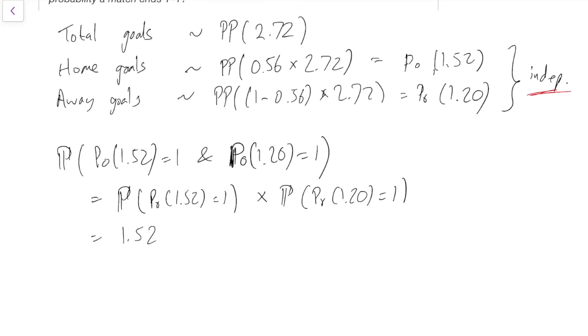So that's 1.52e to the minus 1.52. Similarly, this is 1.20e to the minus 1.20. And then you just need to type all that into your calculator. It comes out as 0.12. So if you believe that football goals do follow a Poisson process, then you should see that about 12% of games come out as a 1-all draw. There we go.